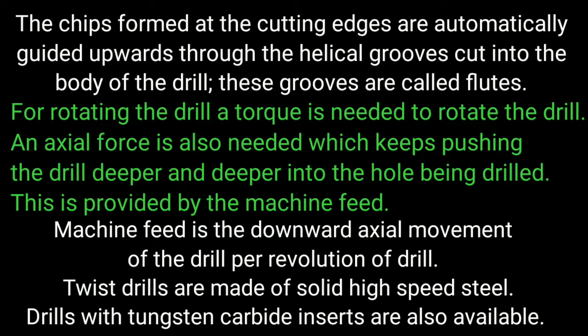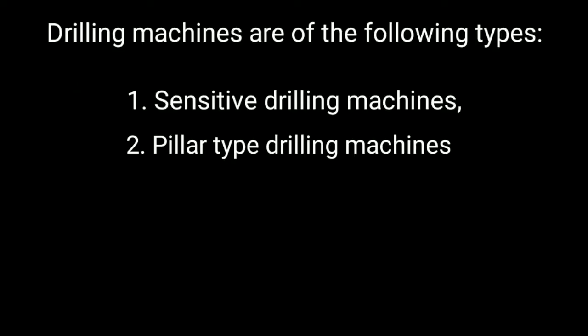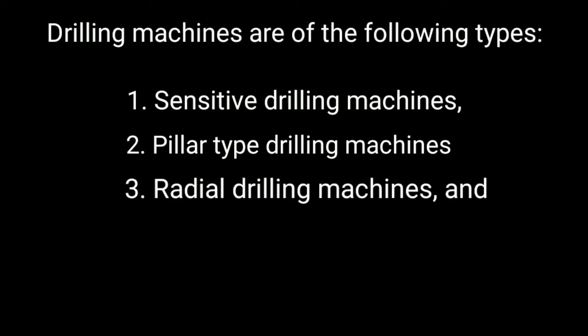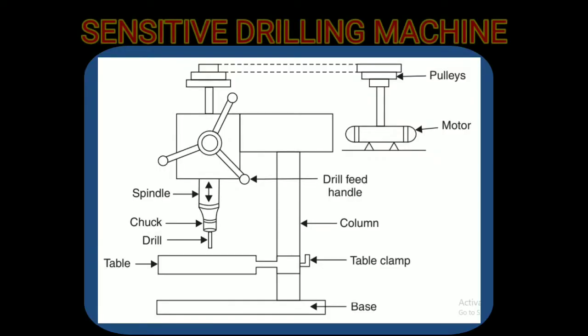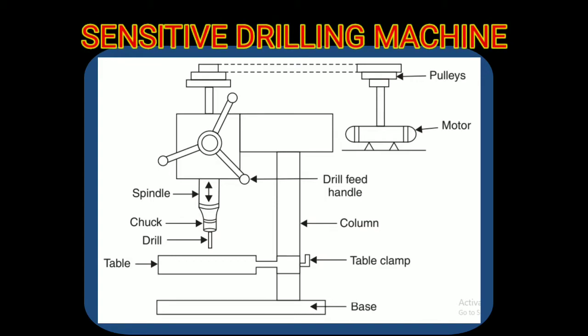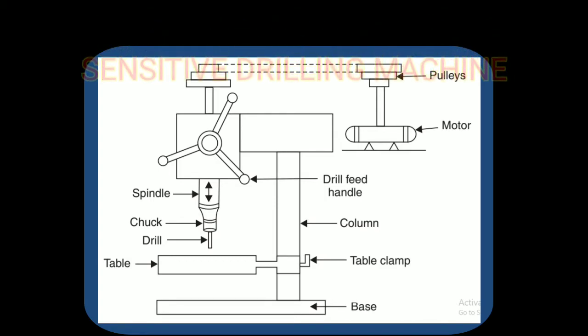Classification of drilling machines: first, sensitive drilling machines; second, pillar type drilling machines; third, radial drilling machines; and fourth, multi-spindle drilling machines. A sensitive drilling machine is a light duty machine.